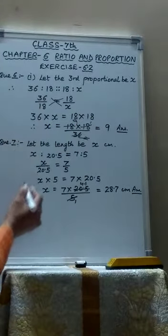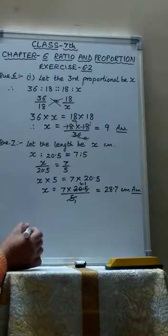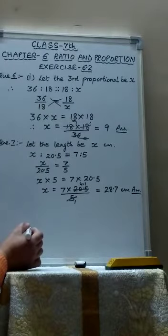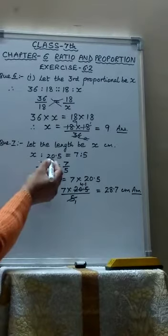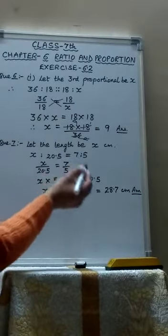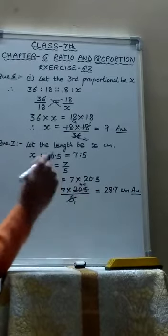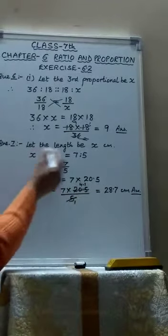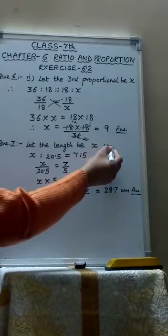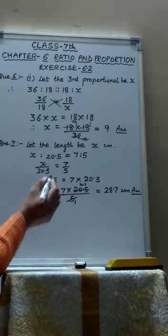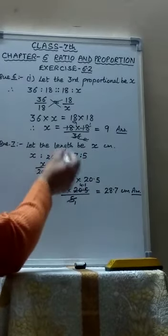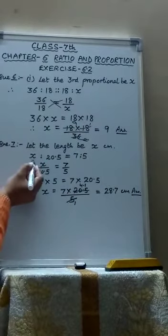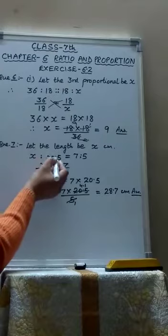Now question number 7. The ratio between the length and width of a rectangle sheet of paper is 7 ratio 5. If the width of the sheet is 20.5 cm, find its length. If the length is not given to you, but the width is given. So let the length be x cm. And the ratio between length and width is 7 is to 5. The order should be the same. The length we have taken to be x and the width is 20.5.